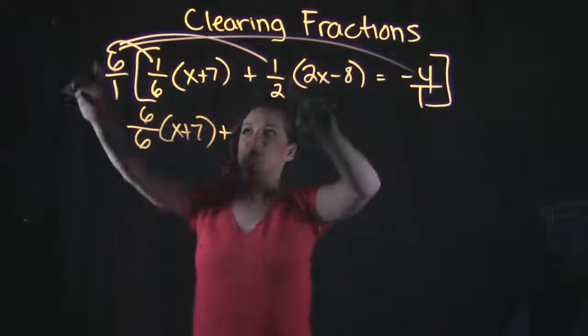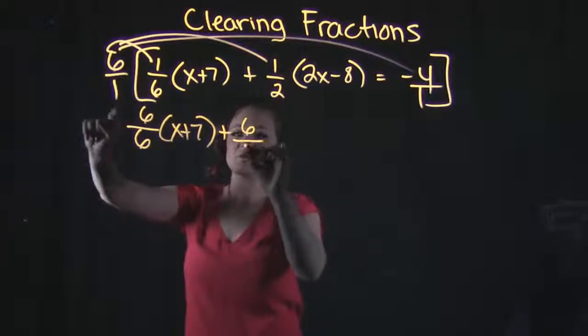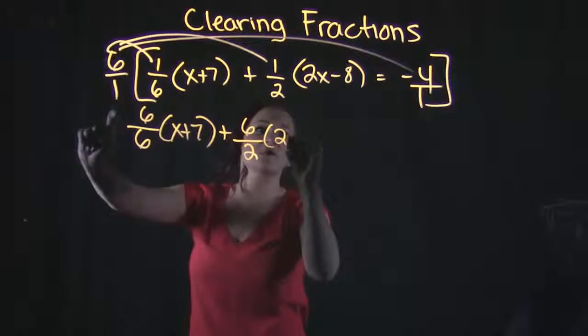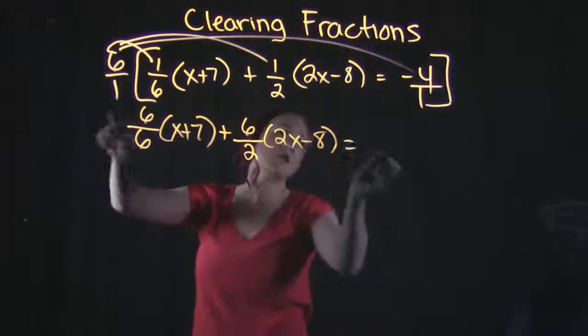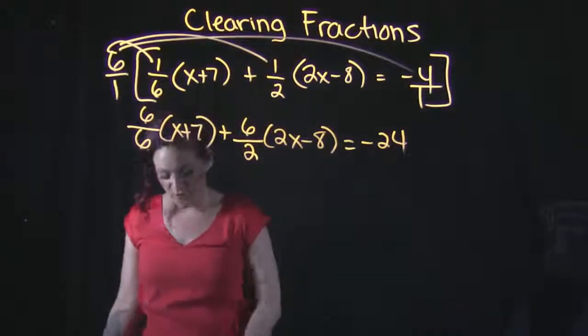Do the next multiplication. Six times one is six over one times two is two. Drop down the two x minus eight with it. And that's going to equal six times negative four, which is negative 24.